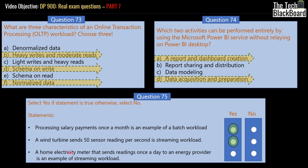Moving on to the third statement: a home electricity meter that sends readings once a day to an energy provider — is this an example of a streaming workload? Pay attention — we are sending data only once per day. So we have a lot of readings throughout the day, but we only send it once per day. Thus, it is an example of a batch workload, not a streaming workload. This statement is false.